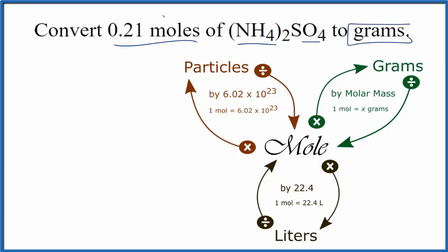In this 0.21 number of moles here, I just made that up for the problem. So we have 0.21 moles of NH42SO4. We want to get these moles and convert them to grams.